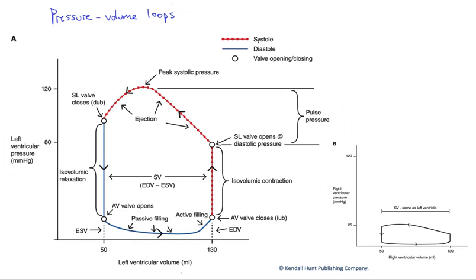In this series of graphs, we're going to look at the pressure-volume loops of the left and right ventricles in graphs A and B here. What these are showing us is the view of cardiac events from the ventricle.